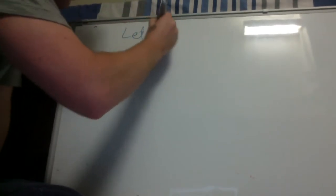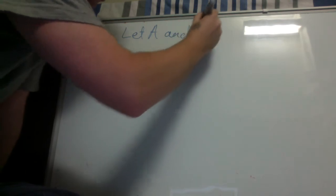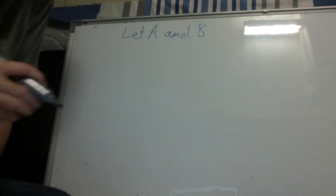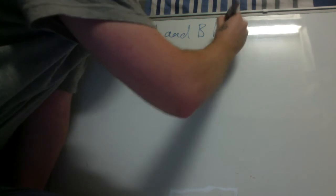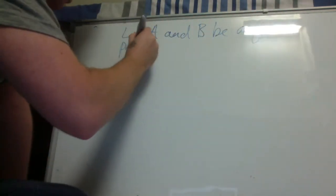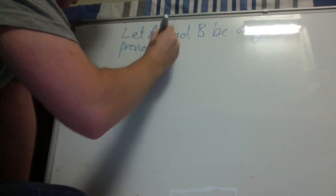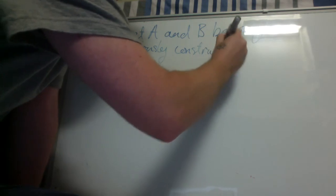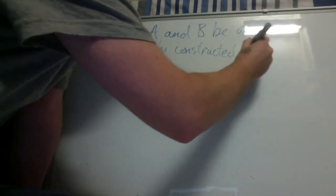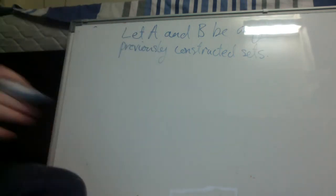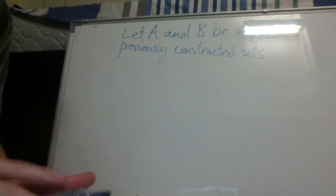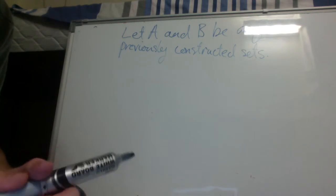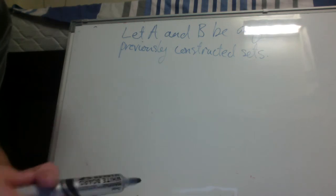Let A and B be any previously constructed sets. So given that A and B have been previously constructed, we can form the Cartesian product like this. So we apply...